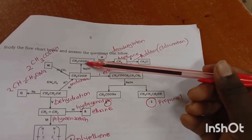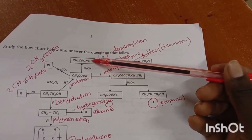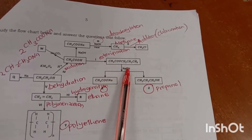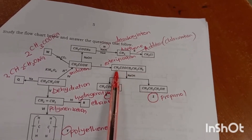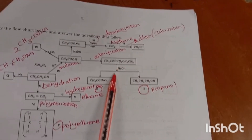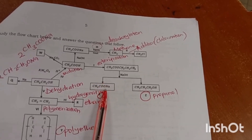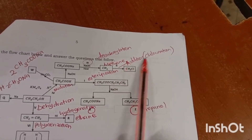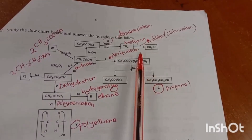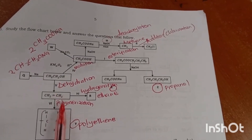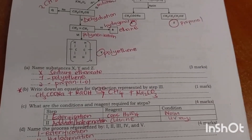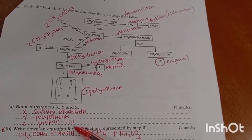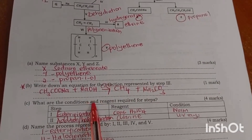When you add sodium hydroxide you get sodium ethanoate. When you carry out esterification you get propyl ethanoate. When you react with alcohol and sodium hydroxide you get sodium ethanoate and propanol. When you add chlorine to methane you get methyl chloride. When you polymerize this you get poly(chloroethene).